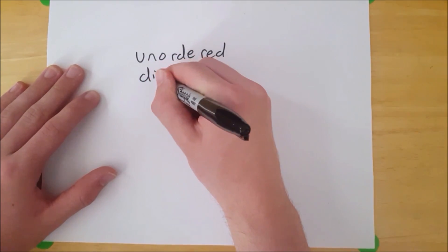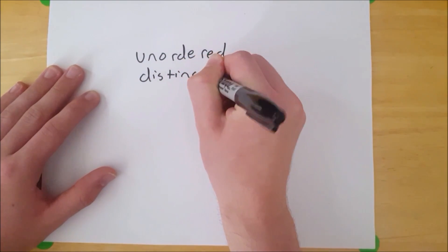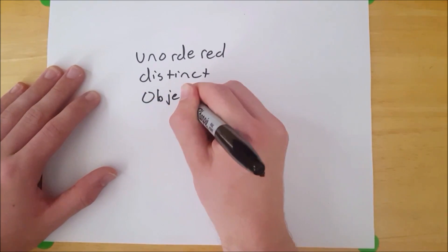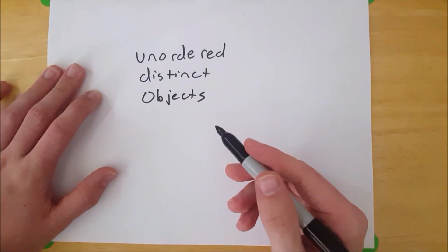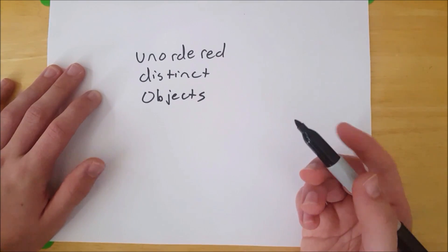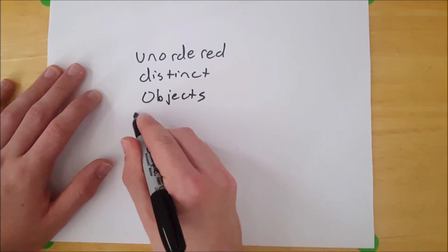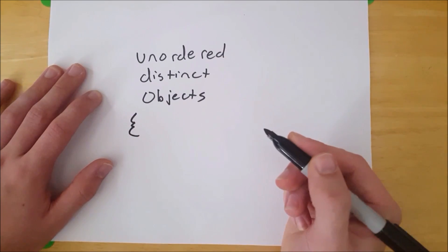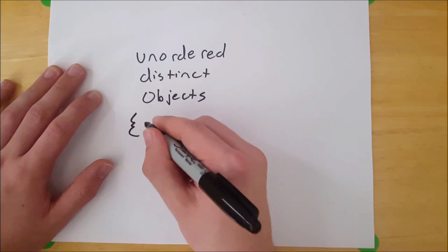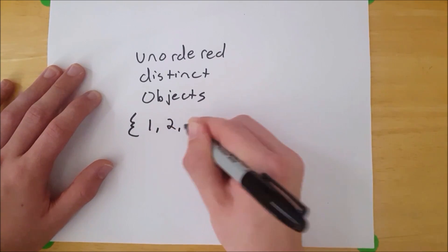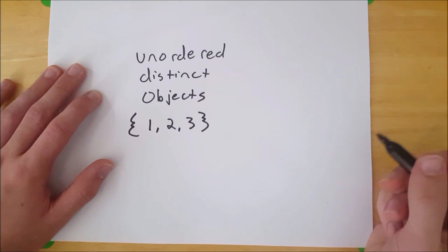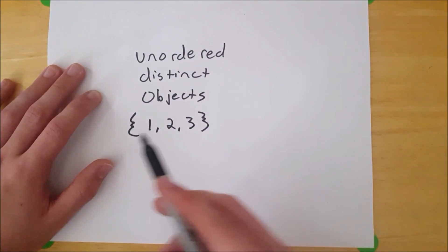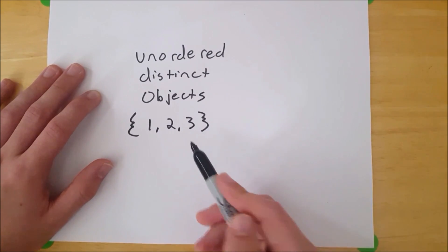And there's three keywords there: unordered, distinct, and objects. Before we talk about these keywords, let's write out a simple set. You can start a set with this open bracket sign, and we're going to put three objects in the set: one, two, and three. And then close the set with a closed bracket sign. Now, the objects in the set are referred to as elements. So one, two, and three are elements of the set.